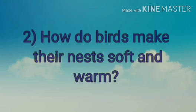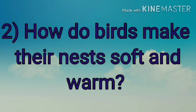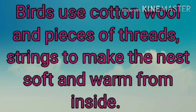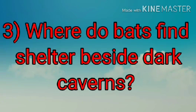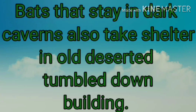Second question: how do birds make their nest soft and warm? Very good, students. The answer is: birds use cotton, wool, and pieces of threads and strings to make the nest soft and warm from inside. Third question: where do bats find shelter besides dark caverns? The answer is: bats also take shelter in old, deserted, tumbledown buildings.